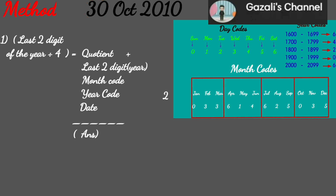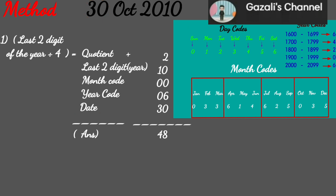So: 2 plus 10 plus 0 plus 6 plus 30. Answer: 48.